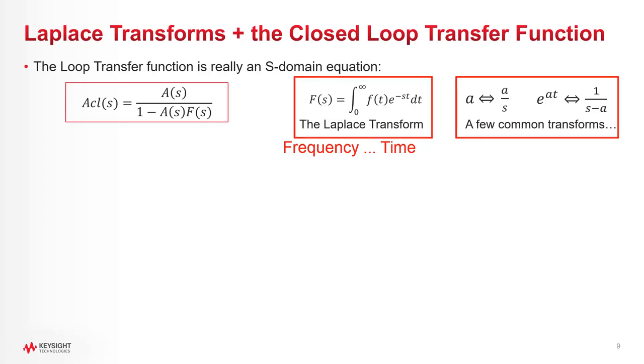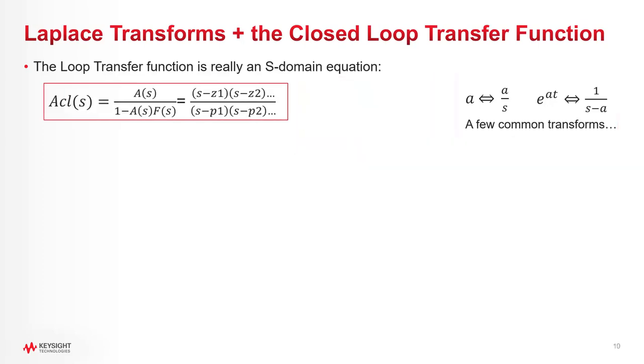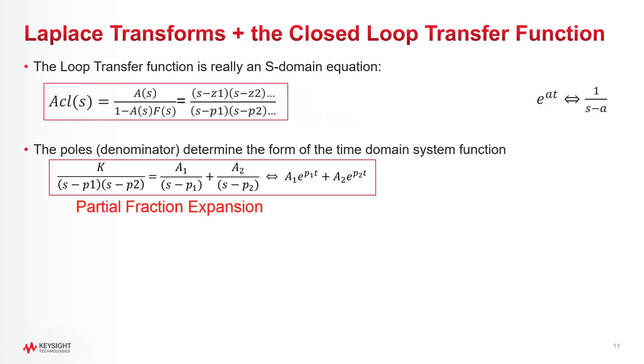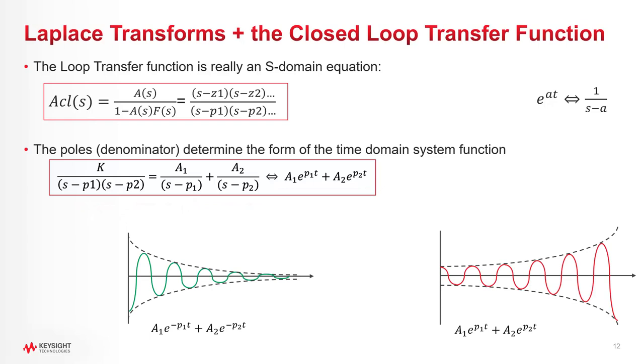Anyway, any s-domain equation can be factored into its roots, both in the numerator and the denominator. These are, of course, called zeros and poles. And for the poles, we can use a technique called partial fraction expansion to actually factor them into terms that will map to a combination of exponential functions in the time domain. With exponentials, they can either grow or shrink depending on the sign of the exponent. So if the exponent's negative, they shrink, of course, and if it's positive, they grow. And ultimately, we can map that behavior back to the sign of the real part of the pole in the s-domain.